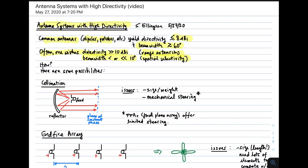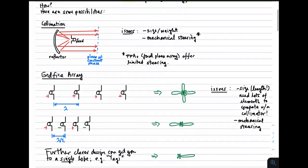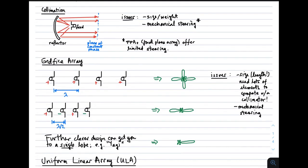Rather than jumping to one obvious answer, which is a large array, let's think about some of the possibilities so we see what the trade-offs are. First, collimation.